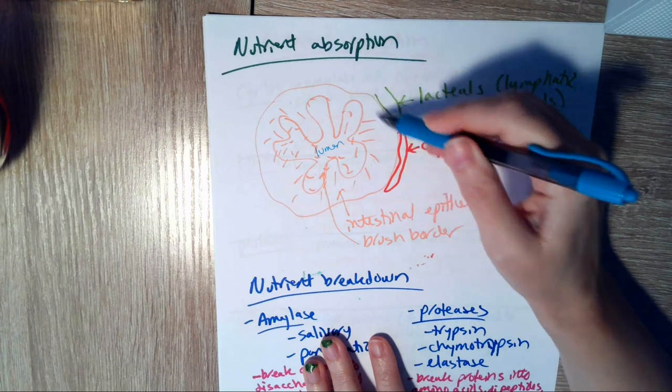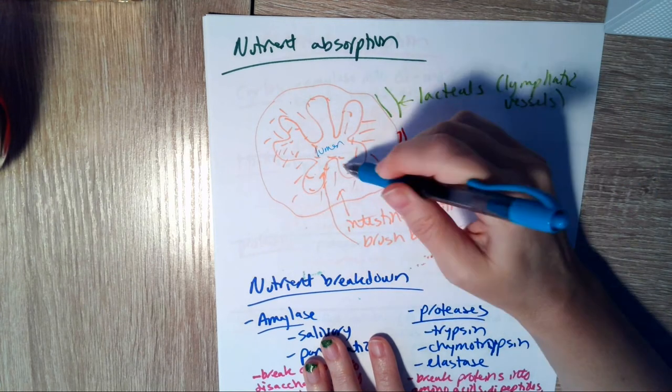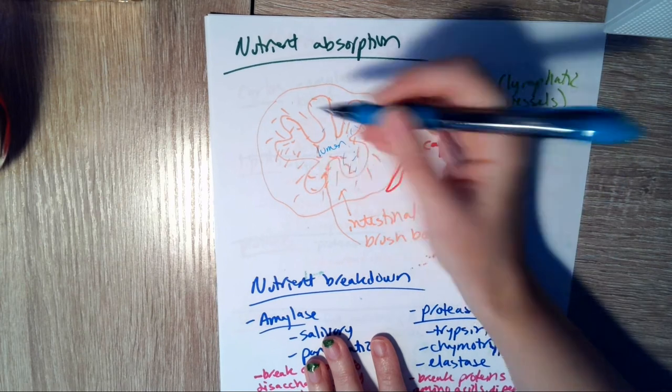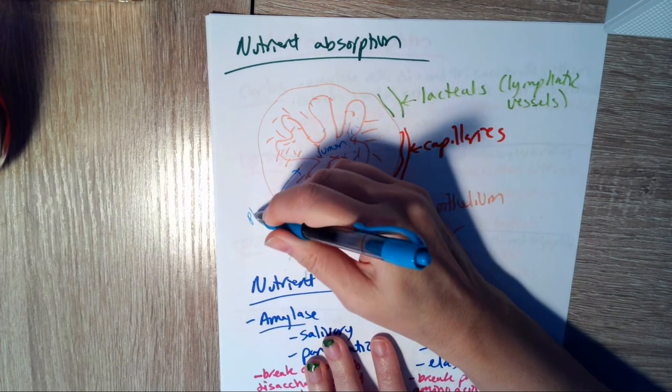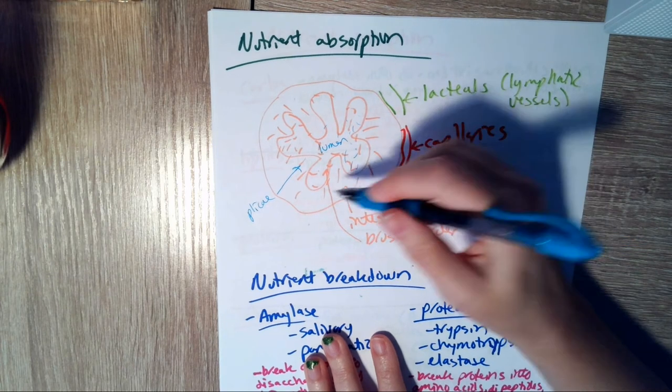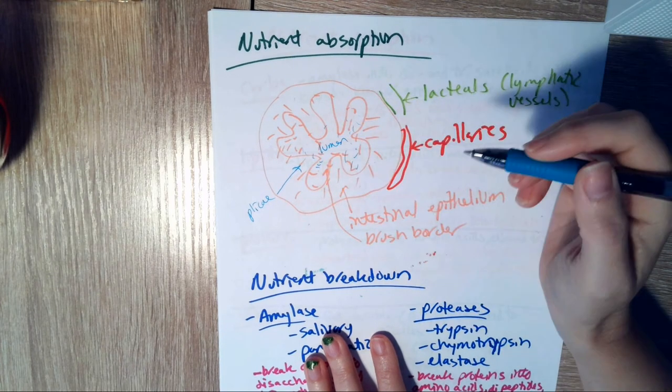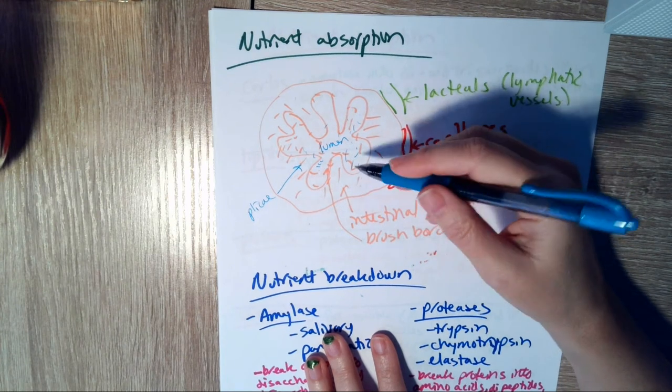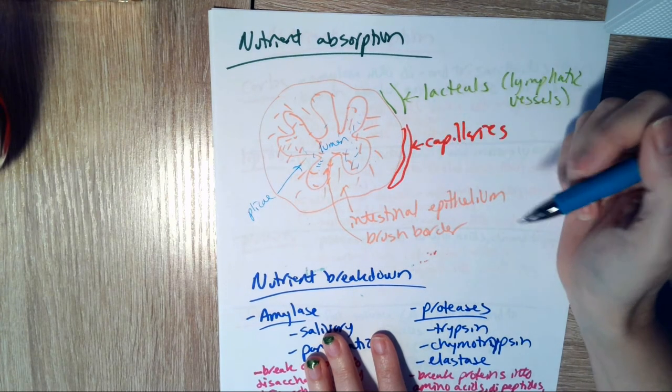These would be the intestinal epithelial cells all around, and then we have the villi extending out, the plicae or the circular folds to help increase surface area along with the villi, and then the little tiny hairs that would be the brush border that are going to help with increasing surface area, but also with breaking down carbohydrate.